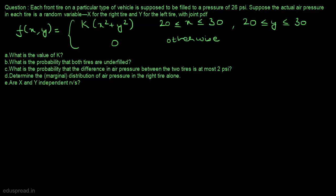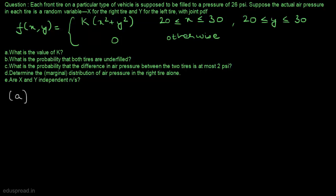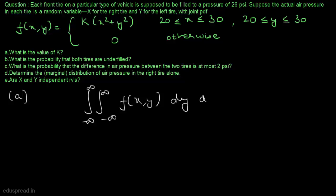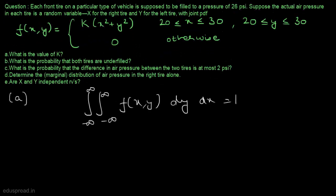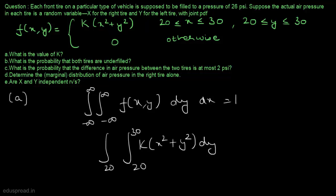In part A, we have to find the value of k. For this joint PDF to be a legitimate PDF, the integration of this PDF over all the values of y and x should be equal to 1. We are given that x is between 20 and 30 and y is between 20 and 30.